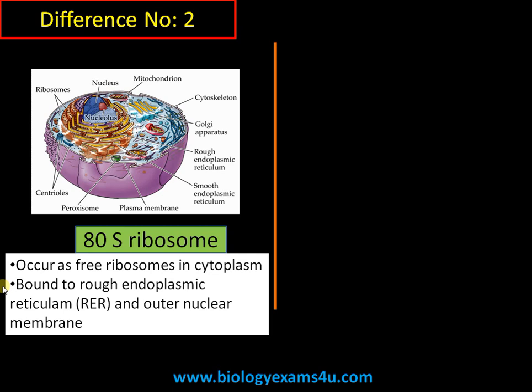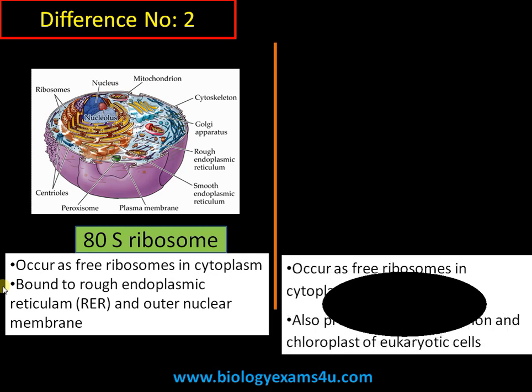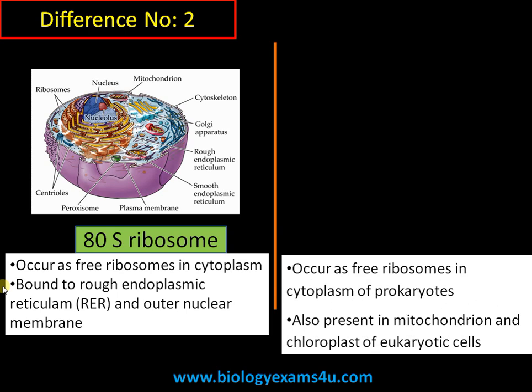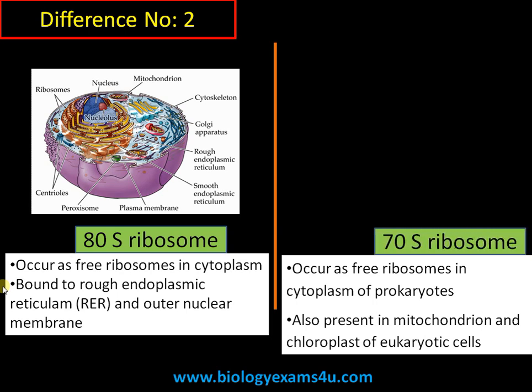For 70S ribosomes, since prokaryotes lack a membrane-bound nucleus, they occur freely in the cytoplasm as free ribosomes. They are also present in the mitochondria and chloroplasts of eukaryotic cells.